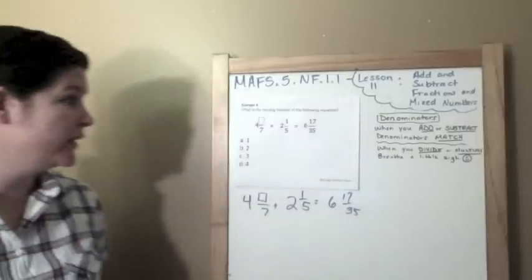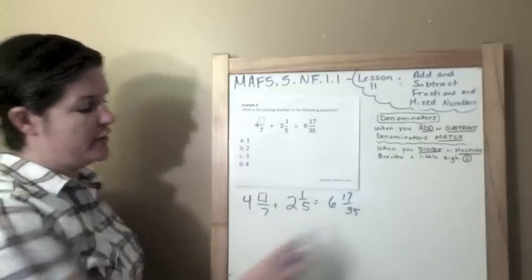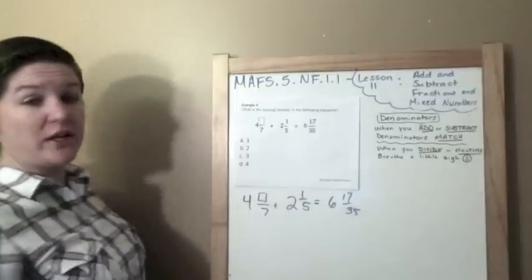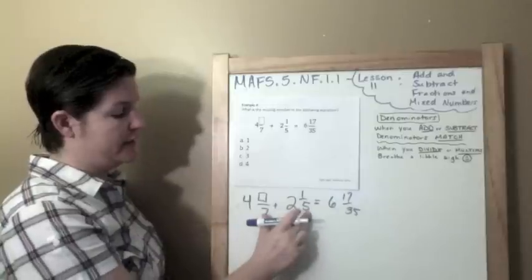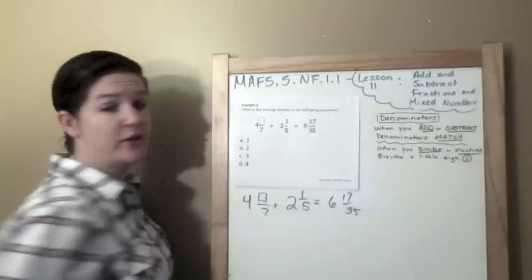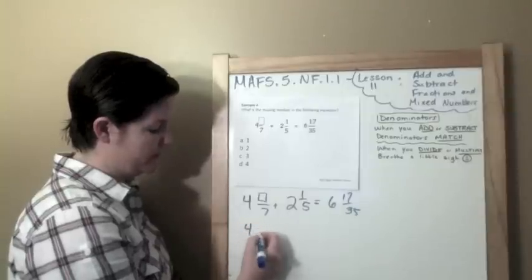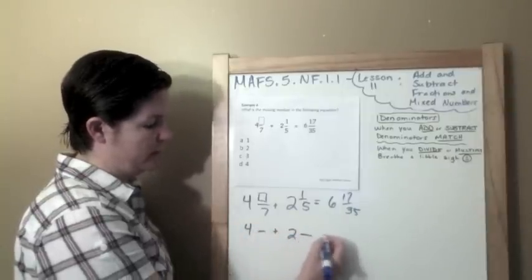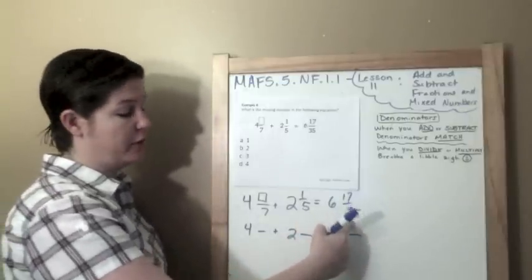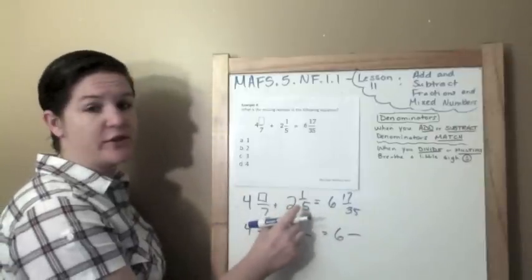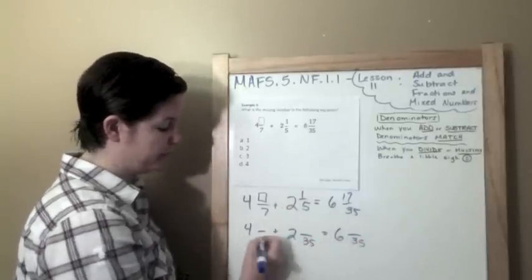All right. So we're on our last one. It's example four. And we have another missing number problem. It says, what's the missing number in the following equation? So I've written the equation down here. It's an equation because it has an equal sign. And I'm adding fractions that do not have the same denominator, but my denominators must match. So what I need to do is rewrite this with all my denominators matching. Now I noticed that over here, my sum has the denominator of 35. And I know that seven times five is 35. So I'm going to go ahead and just make my denominator 35 for all of them.